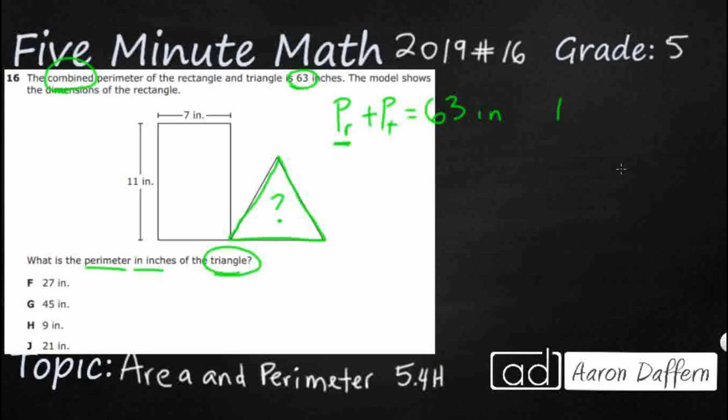So we know the perimeter of a rectangle, I have to put the little R again, because now we've got two different perimeters we're dealing with in this problem, is double the length plus double the width. And we've got that here. So we've got our length, we've got our width. And so we can just go ahead and figure out what that perimeter is.